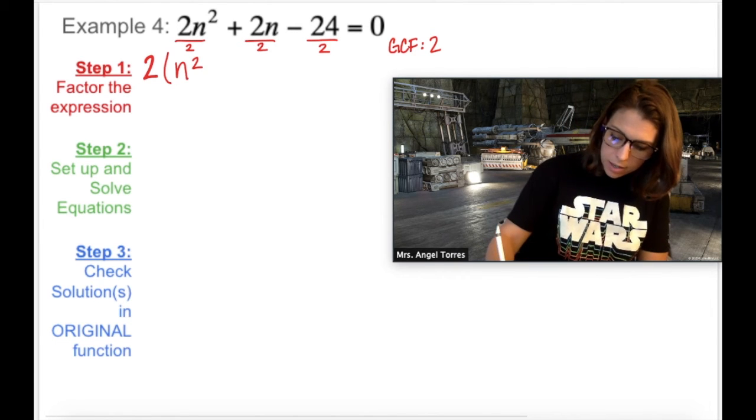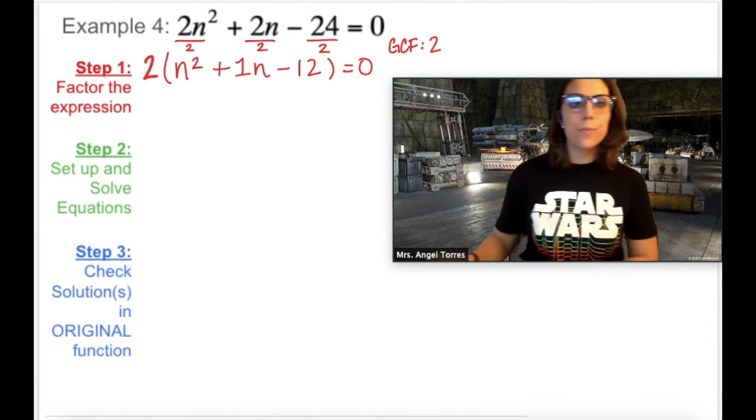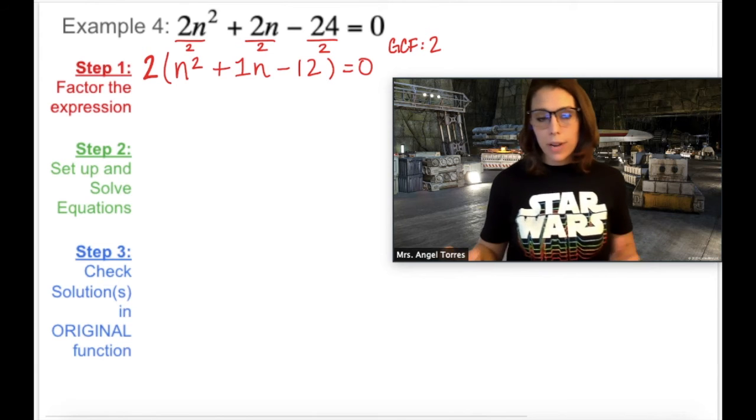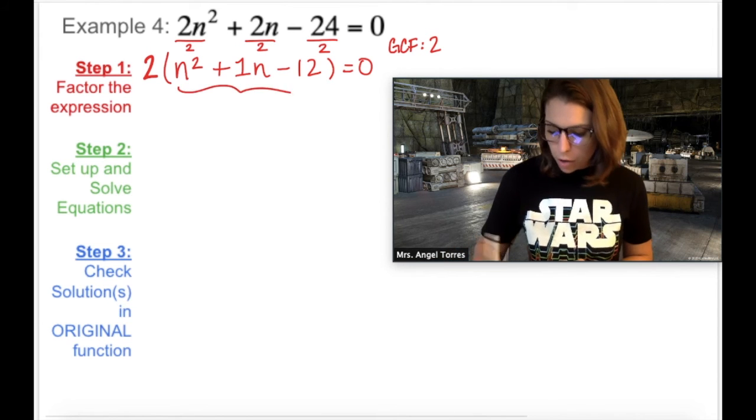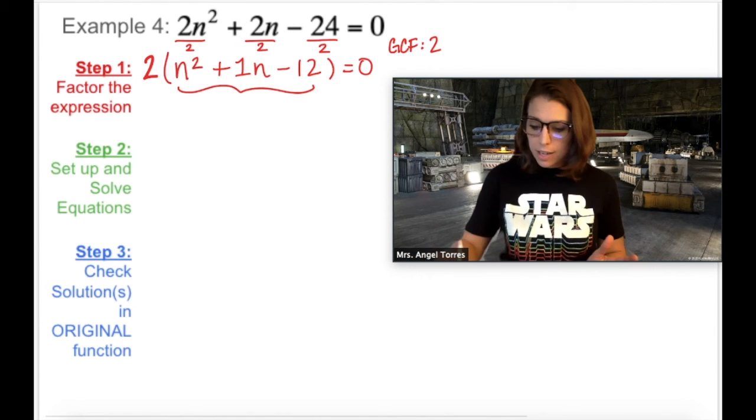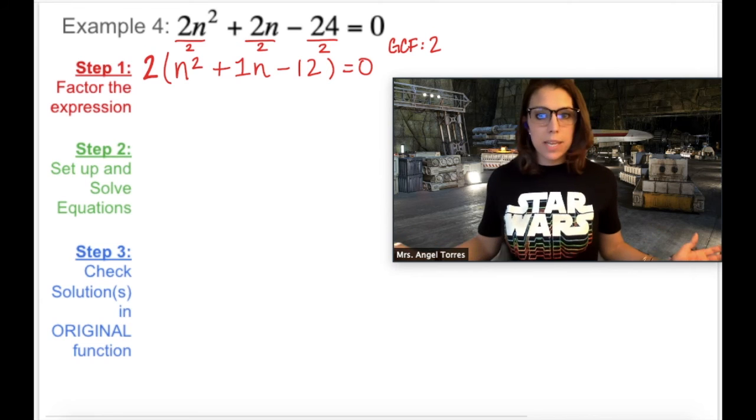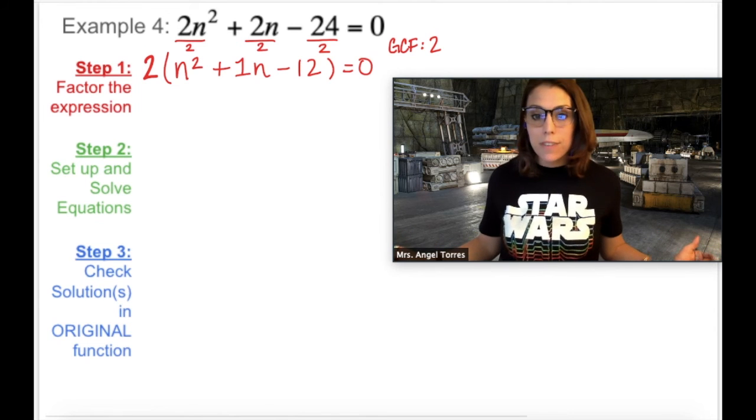So now, inside of the parentheses, I have a trinomial with a leading coefficient of 1. I can factor this using P's and Q's. Why don't you try to finish factoring now?